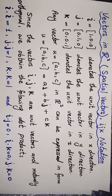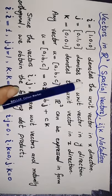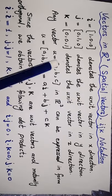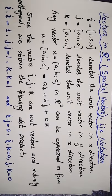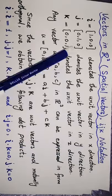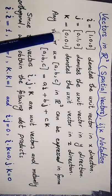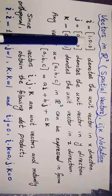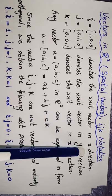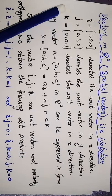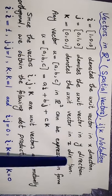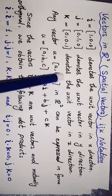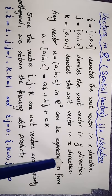Assalamualaikum students. In this lecture we will discuss about vectors in R3. Vectors in R3 are also called spatial vectors. In physics we usually deal with R3 vectors. The i, j, k notation of R3 vectors: vector i is of type (1,0,0), which denotes the unit vector in the x direction. Similarly, the j vector is the unit vector in the y direction, and k vector denotes the unit vector in the z direction.